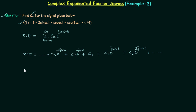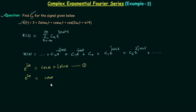For conversion we will use Euler's formula. Euler's formula states e raised to power j alpha is equal to cos alpha plus j sin alpha — let's call it the first equation. If we have e raised to power minus j alpha we will have cos alpha minus j sin alpha, since cos of minus alpha equals cos alpha and sin of minus alpha equals minus sin alpha. Let's call this the second equation.